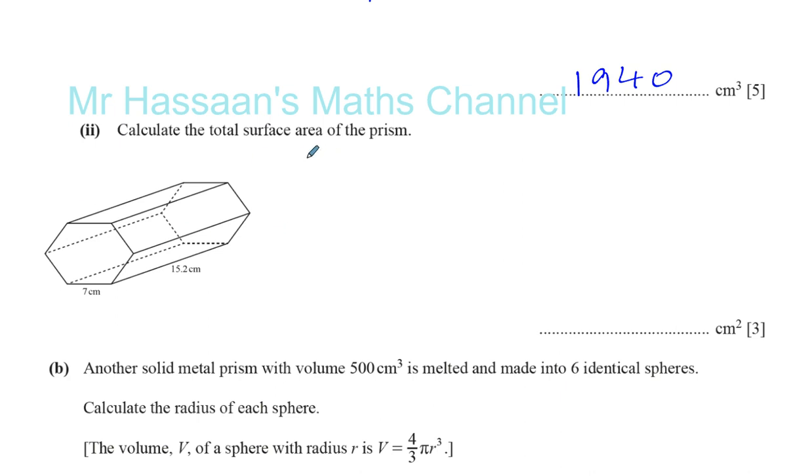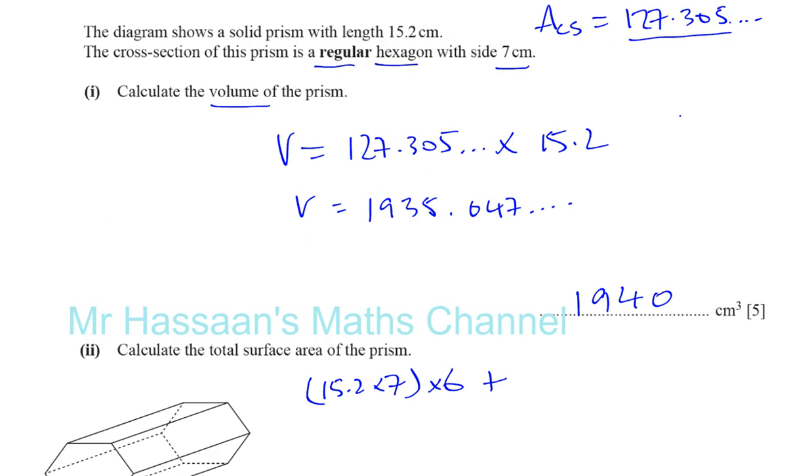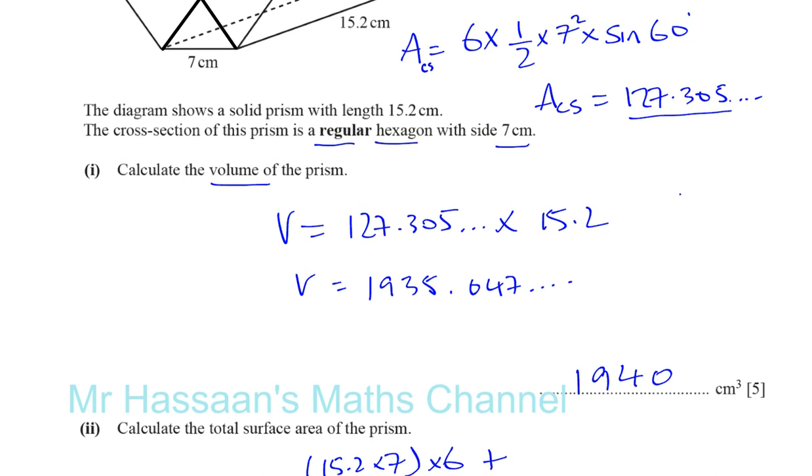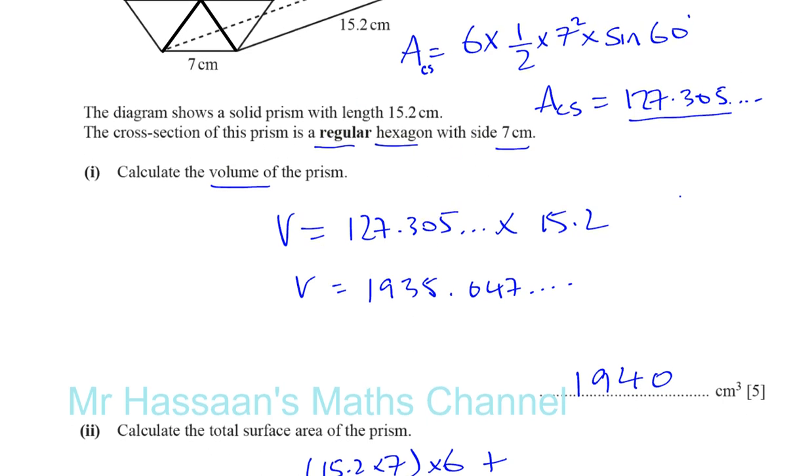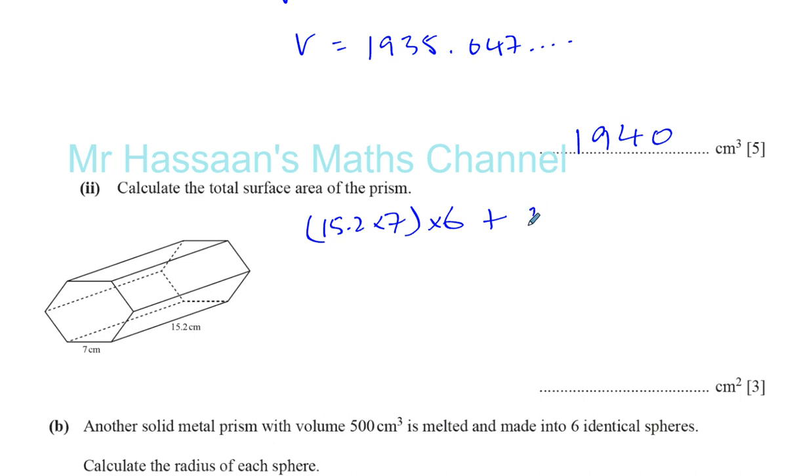Plus the area of these six rectangles. Each of them are seven times 15.2. So you've got basically 15.2 times seven. And you've got how many of them? Six of them. That's the area of all these rectangles around the outside. Plus, you've got the area of the hexagon, which is 127.305, plus two times 127.305. That's the method of finding the answer, and that's perfectly fine.